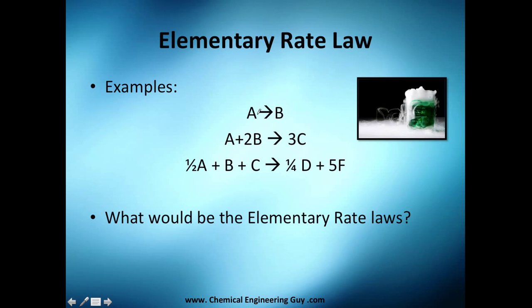Let's have some examples. A turns out to be this one B. A plus 2 moles of B turn out to be 3 times C. Half mole of A plus 1 mole of B plus 1 mole of C will give you 1 fourth mole of D and 5 moles of F. And if I would ask you what's the elementary rate law, well let's do it.